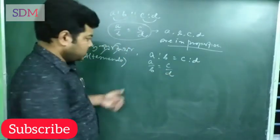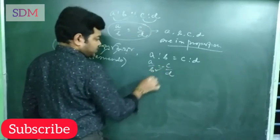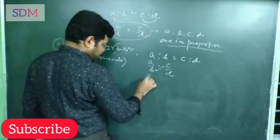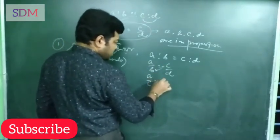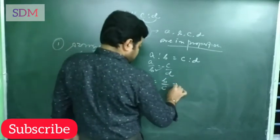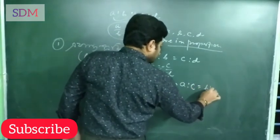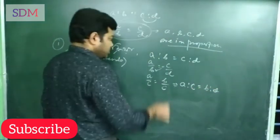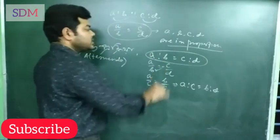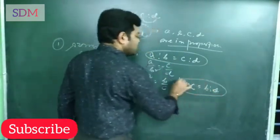Now, let's look at that. A by C equal to B by D. That is, A is to C equal to B is to D. So, if A is to B equal to C is to D, then A is to C equal to B is to D. Clear?